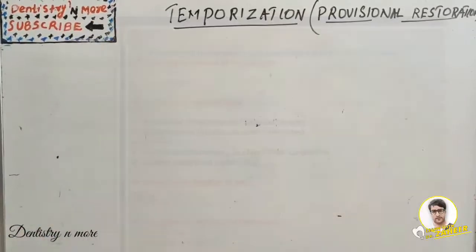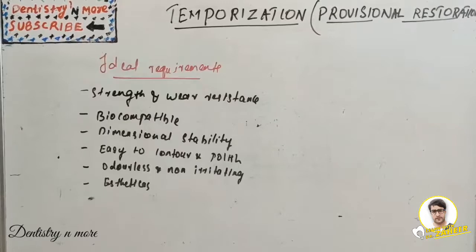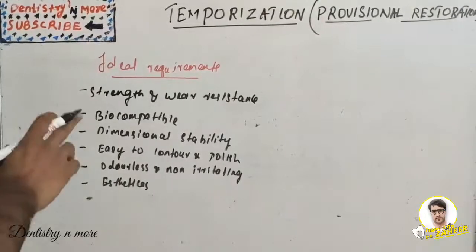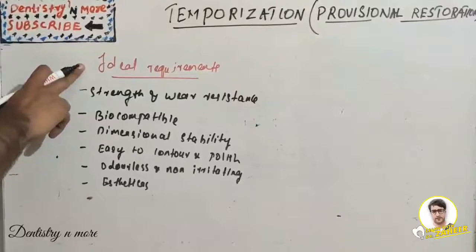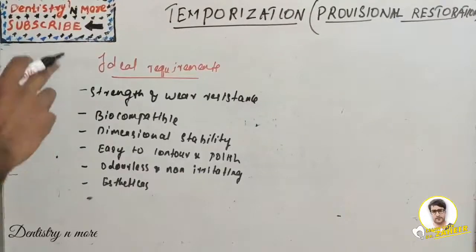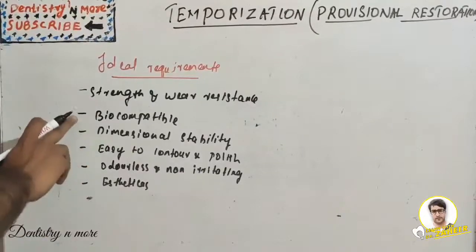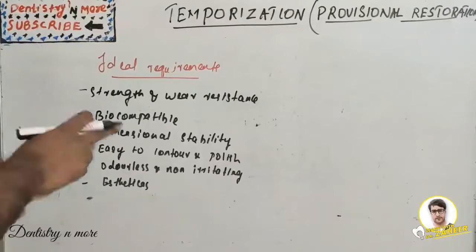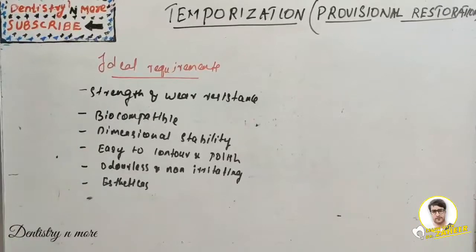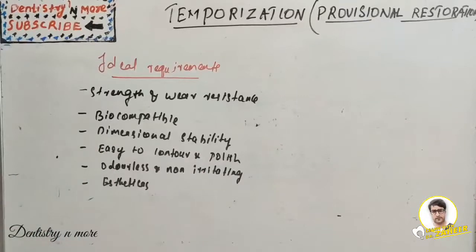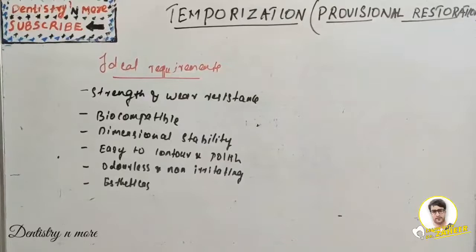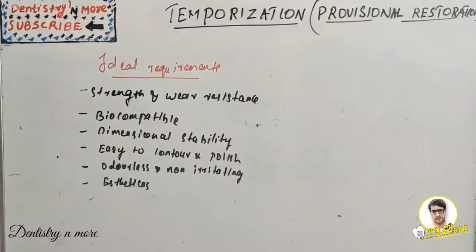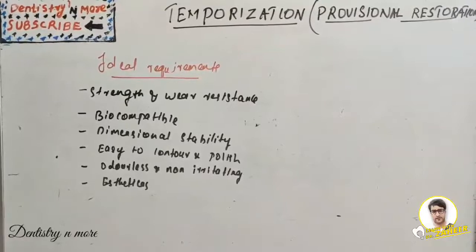The technique can be direct, indirect, or a combination. The ideal requirements of a provisional restorative material are: adequate strength and wear resistance, biocompatibility, good dimensional stability, ease of contouring and polishing, ease of repair, being odorless and non-irritating, chemical compatibility with the luting agent, and adequate working and setting time.